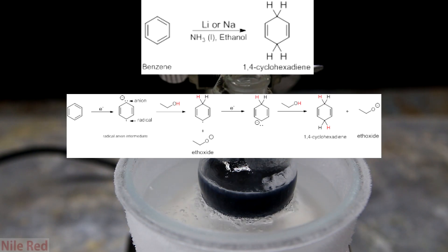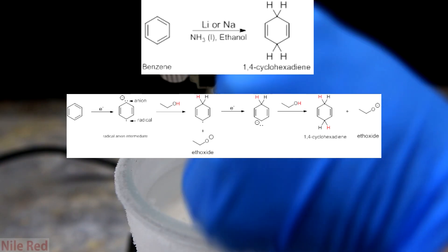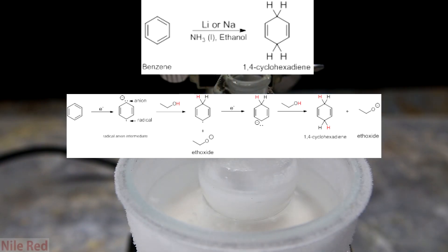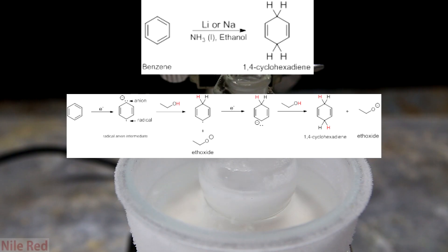A second electron is then added to the ring to turn the radical into an anion. Then just like before the anion attacks another ethanol molecule pulling its hydrogen and forming the final product. The side product in this reaction is the deprotonated ethanol which is known as an ethoxide.